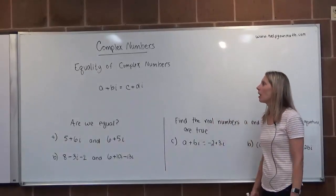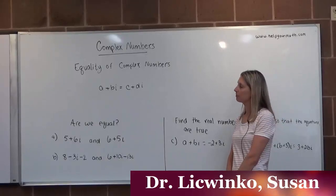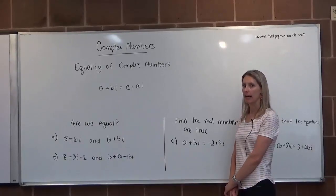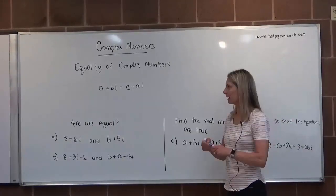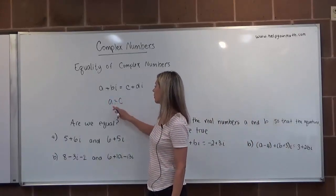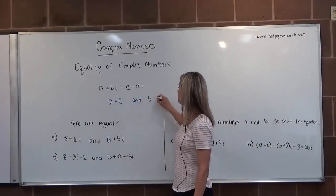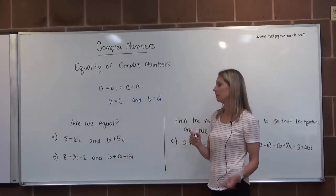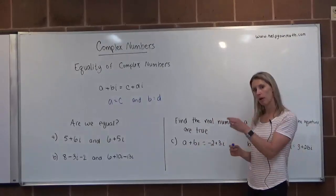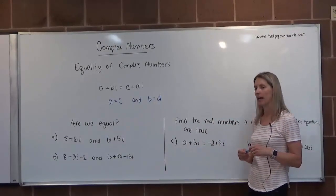In this video we're going to discuss the equality of complex numbers. Two complex numbers A+Bi and C+Di are equal if and only if A is equal to C and B is equal to D. So the real parts must be the same, and the coefficients of the complex parts must be the same as well.